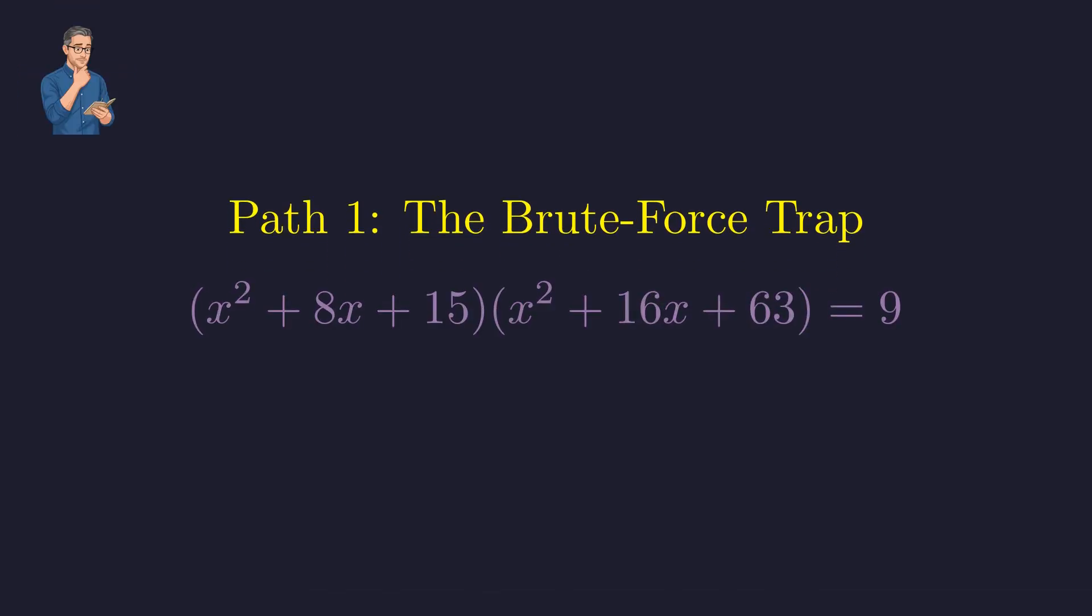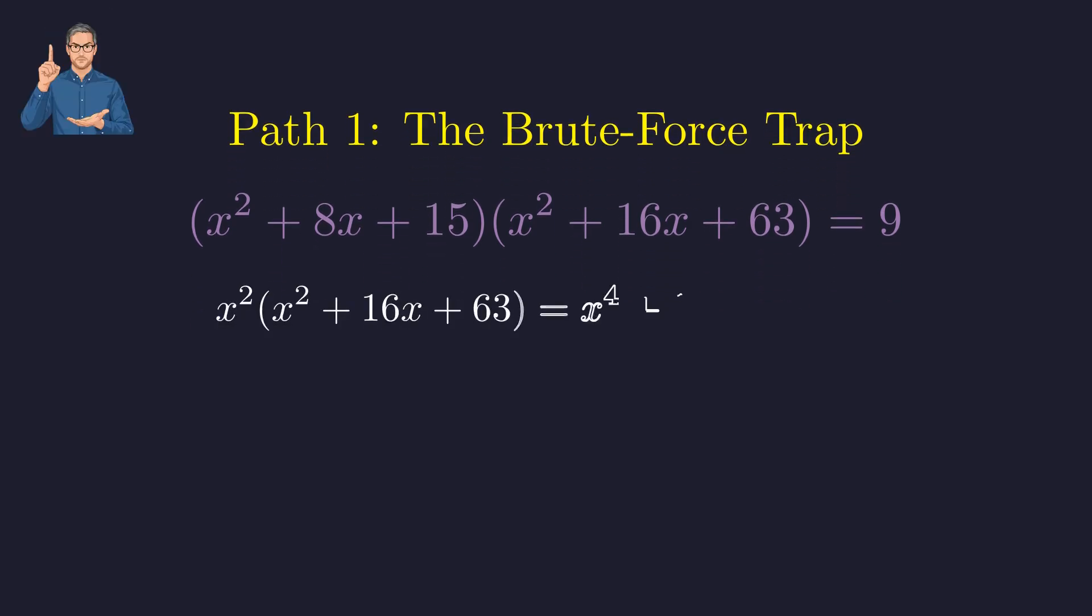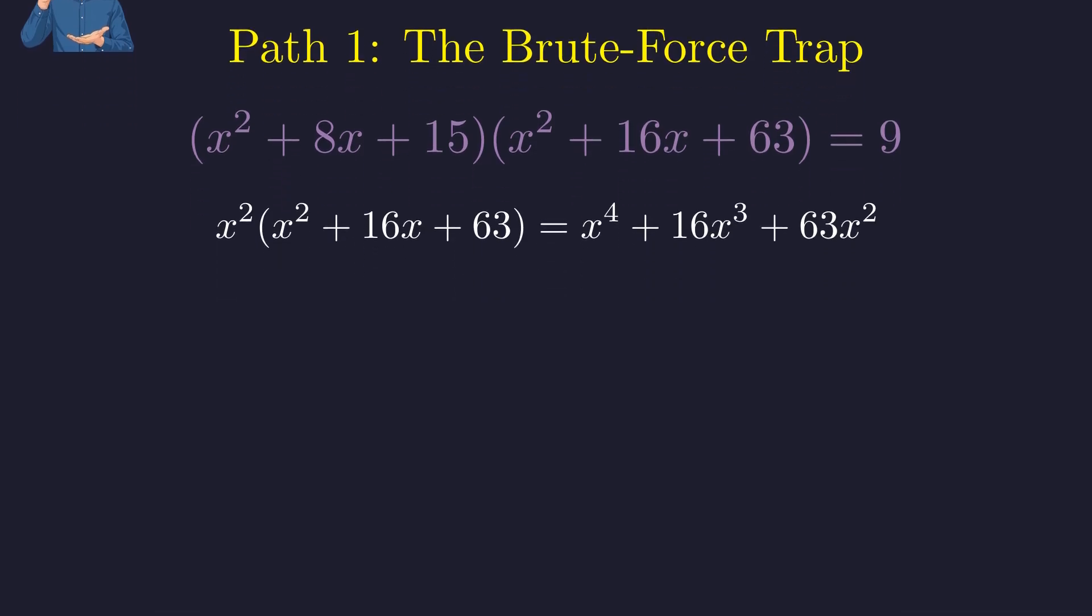First, multiplying pairs of factors gives us two quadratics. Now we must multiply these two expressions term by term. We begin by distributing the x² term from the first factor.